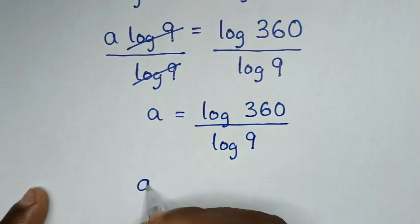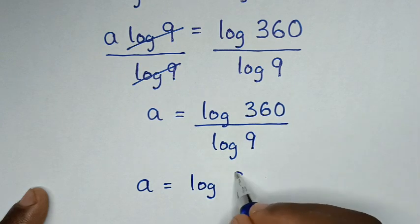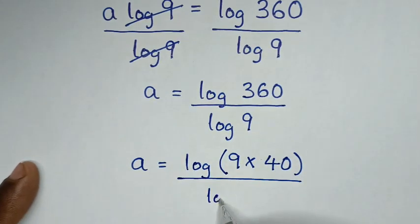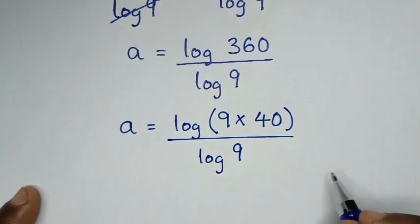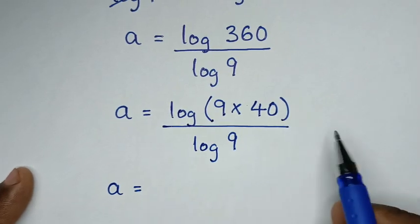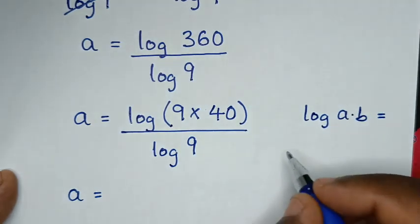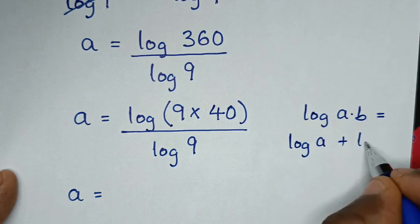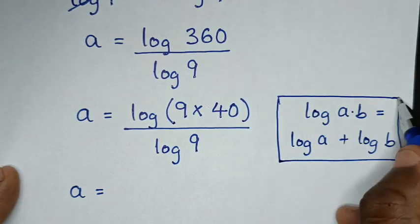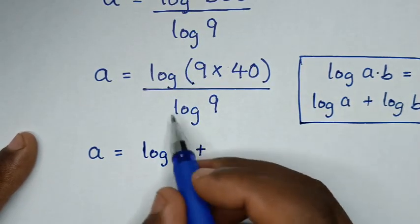Then in the next step, a is equal to log of 360, and 360 is same as 9 times 40, then bracket over log of 9. This part is in the form of log of a times b which is equal to log of a plus log of b. So we apply this rule: log of 9 plus log of 40, over log of 9.